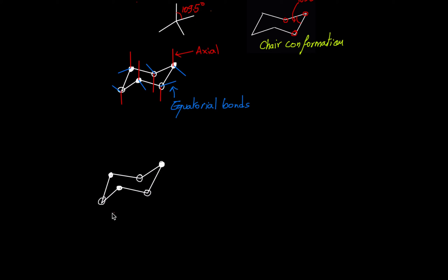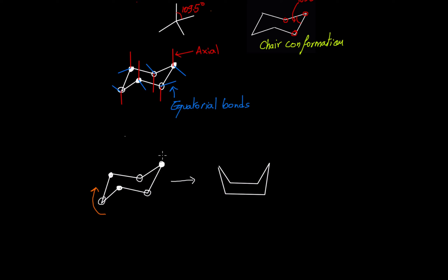In the first step of flipping the chair conformation, we rotate this end up and therefore we get the following conformation, which is called the boat conformation. So now this down carbon here becomes an up carbon, and the up carbons here become down carbons. On this side, nothing changed, so that's going to remain down carbons.